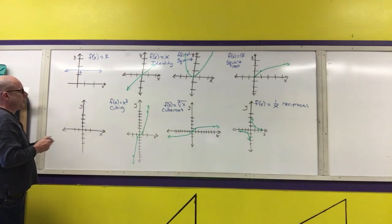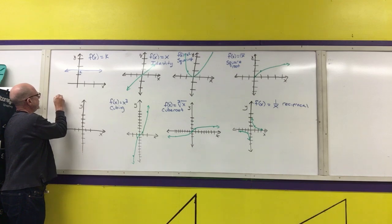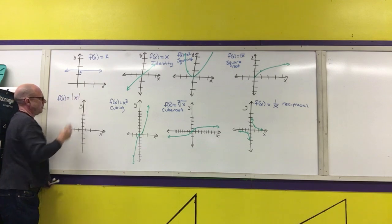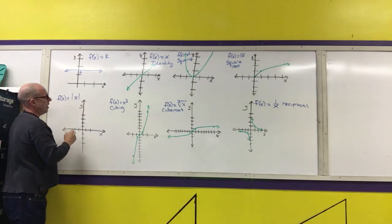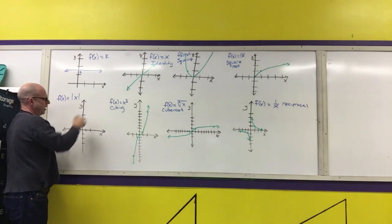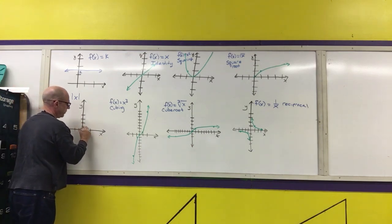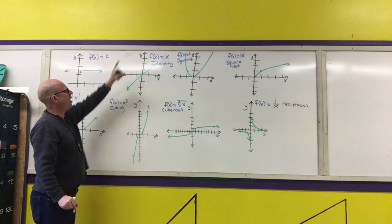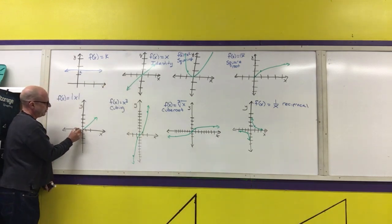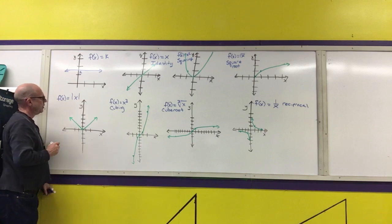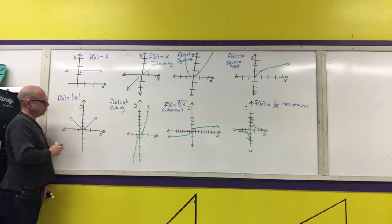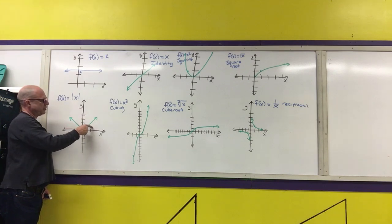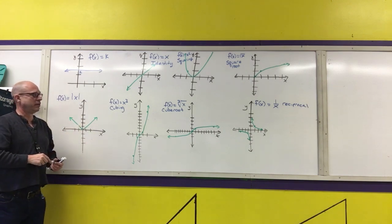The eighth function is f(x) = |x|, the absolute value function. It looks like the identity function on the right-hand side. The absolute value changes negative numbers to positive, flipping the left-hand side above the x-axis, forming a right angle — 45 degrees on each side, with 90 degrees in the middle.